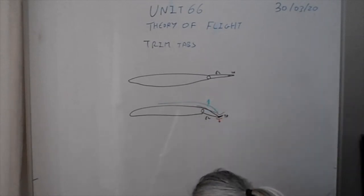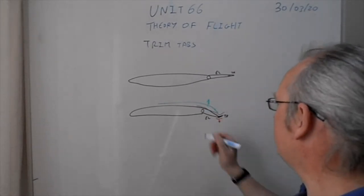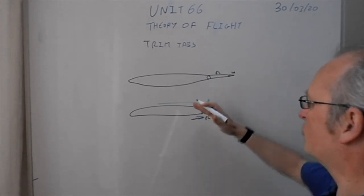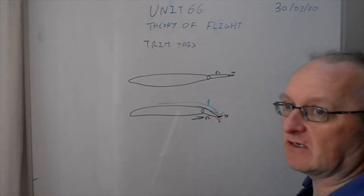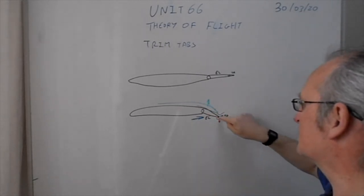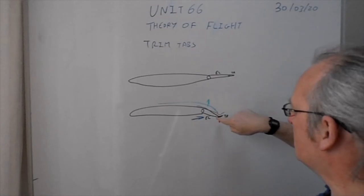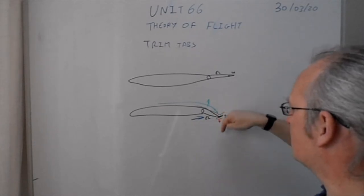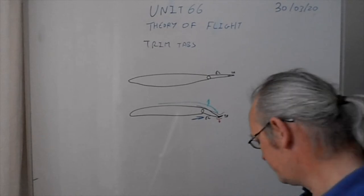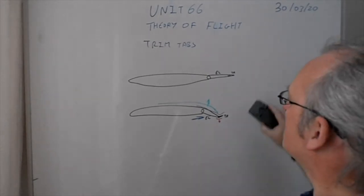Without the trim tab, you'd have loads of airflow bashing against the bottom of the control surface, pushing it back into the neutral position. The trim tab stays in position pulling up like that, and the bit of lift it creates in that direction holds the elevator in that position. Simple as that.